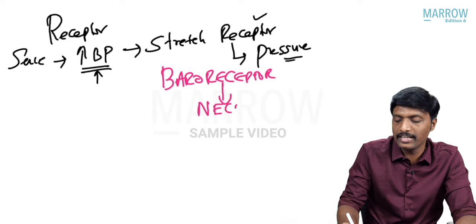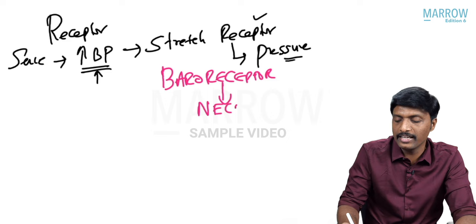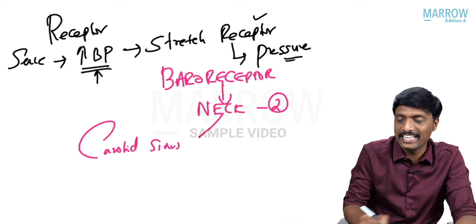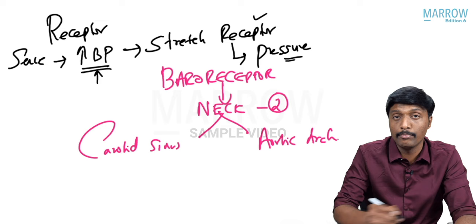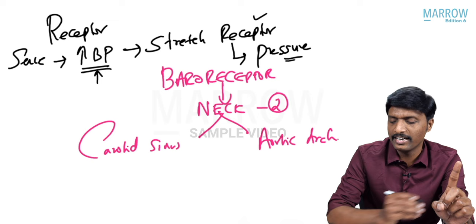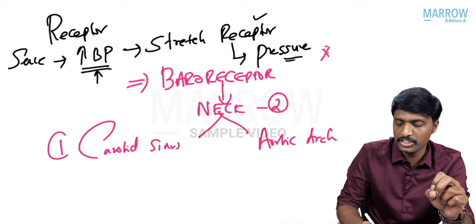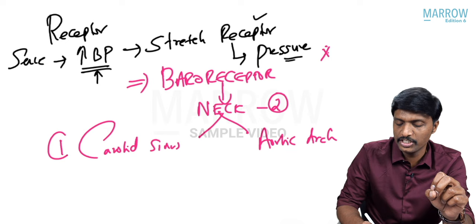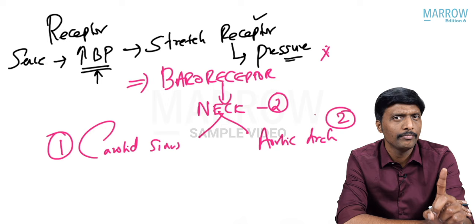This type of baroreceptor is exclusively abundant in the neck region, and they are usually two in number. We call them the carotid sinus and aortic arch — very important, never forget. For baroreflex, you need a receptor: stretch receptors that sense increase in pressure. They are baroreceptors. The first is the carotid sinus; the second is the aortic arch. Once the receptor is identified, we now need the sensory supply — the input.